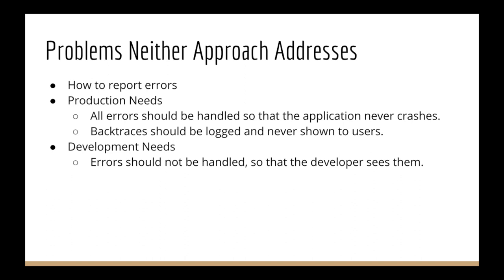On the other side, there are development needs. The production approach gets in the way when you're developing — it's pretty much the reverse. You want all errors to be visible; you want the Python application to crash. If you're running on the console, you get a stack trace and can debug it. If you're running inside a debugger like PDB or PUDB, they have handling for exceptions. If you're running Flask, you get a debugger in your browser when an exception is allowed to go all the way up. So you need an easy way to switch between modes.